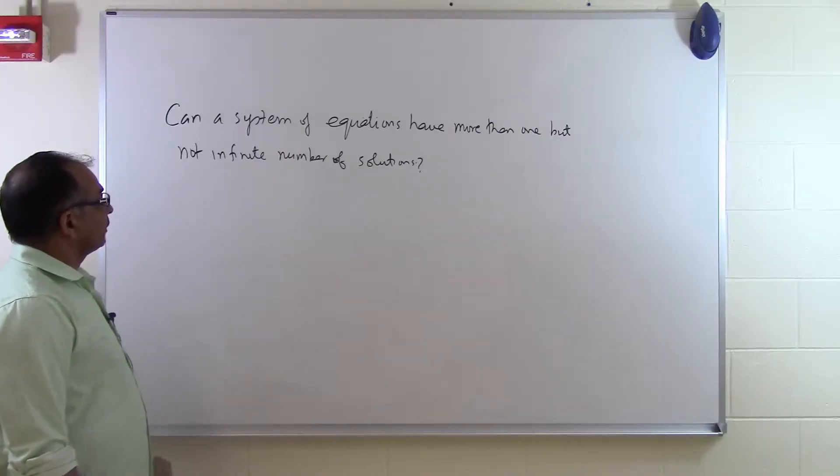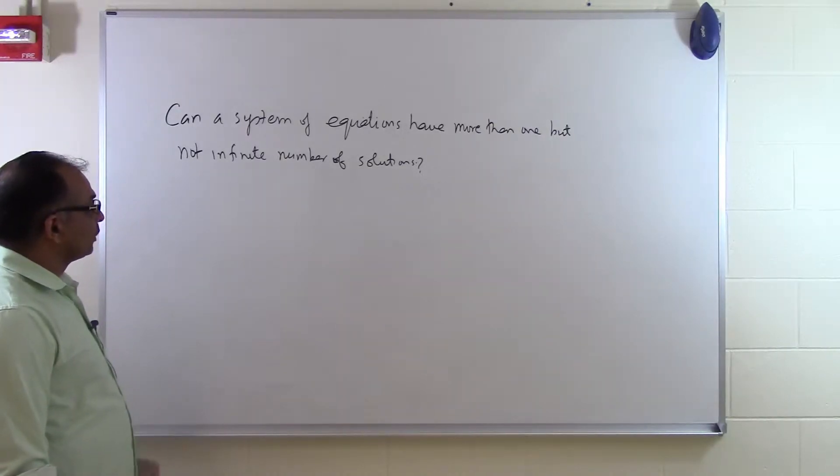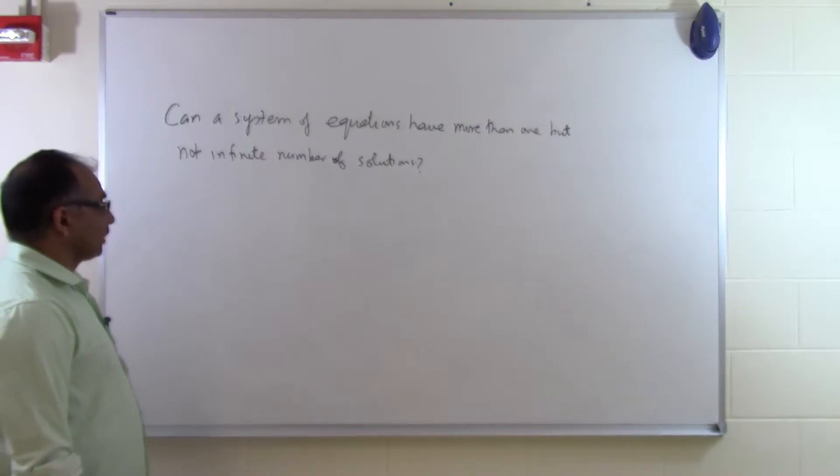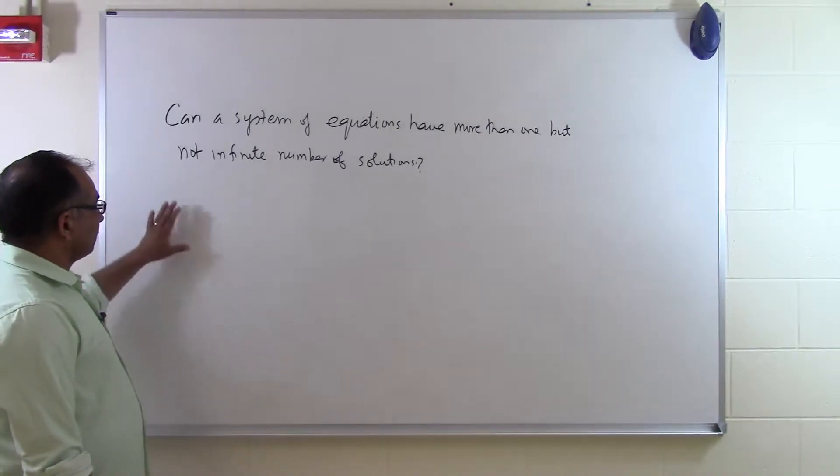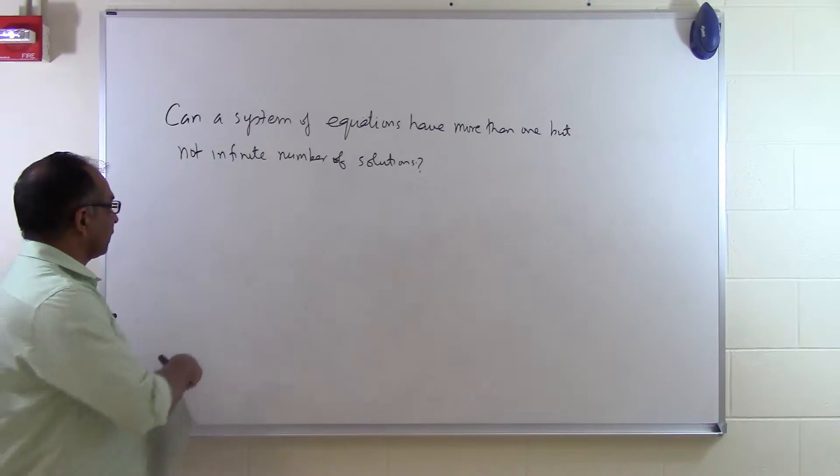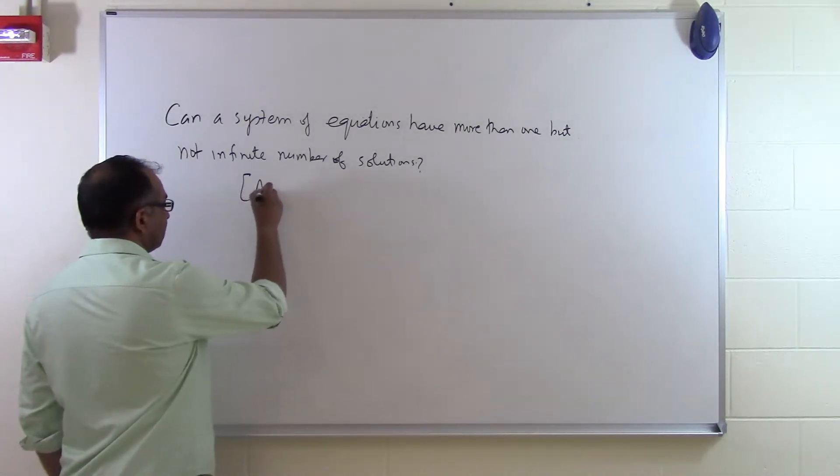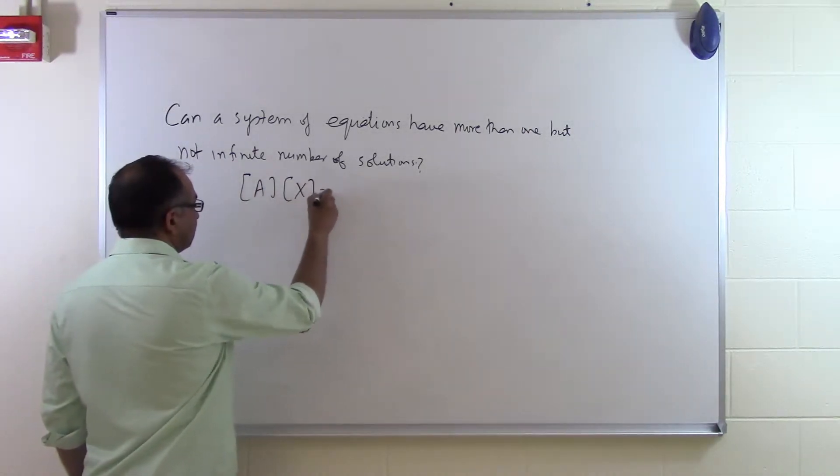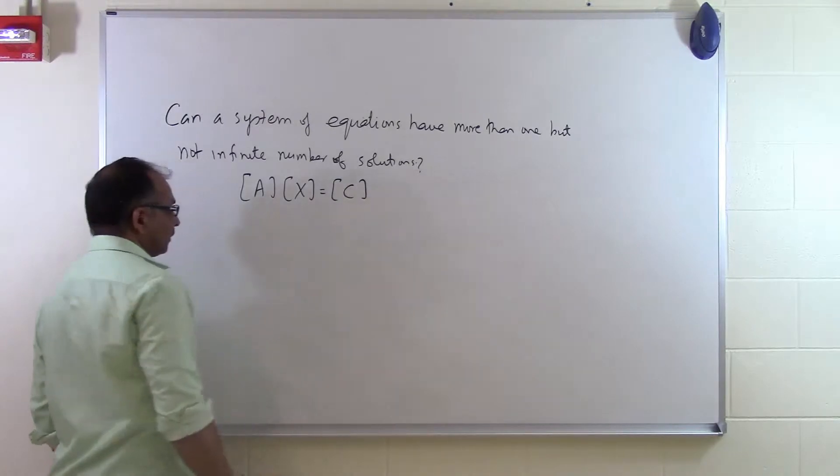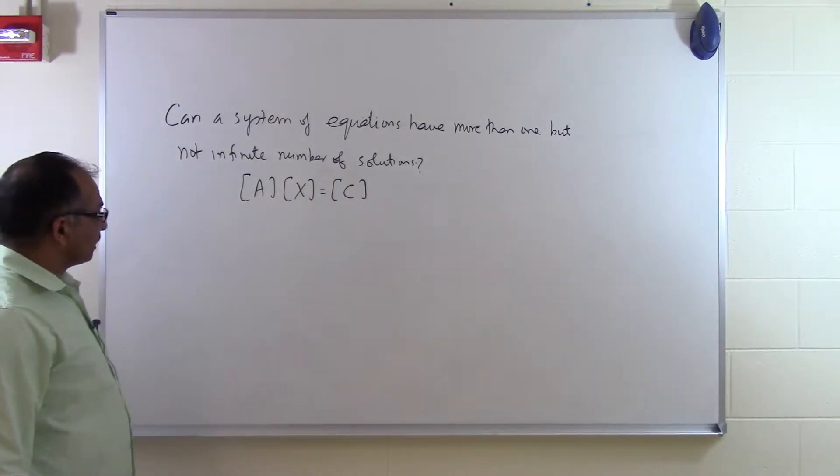In this segment we will talk about if a system of equations can have more than one but not infinite number of solutions. We already talked about that if a system of equations like AX equal to C is consistent, then the only two possibilities are it has a unique solution or infinite number of solutions.